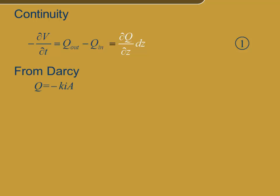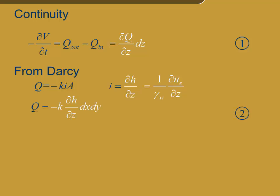Now our second principle: Darcy's law, q equals kia — with a negative sign because the flow is opposite the direction of the gradient. The gradient i is the change in head per length, or the partial of h with respect to z. And h equals pore pressure divided by the unit weight of water, gamma w. Here we use excess pore pressure, so the gradient is one over gamma w times the partial of u excess with respect to z. For our problem, Darcy's law is q equals minus k times dh/dz times the area of flow dx dy. This is the second equation.